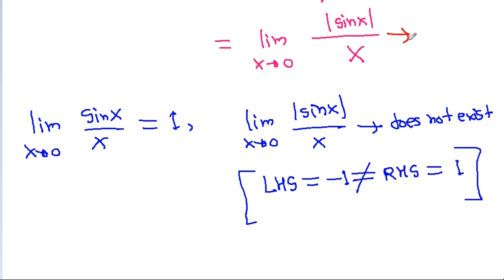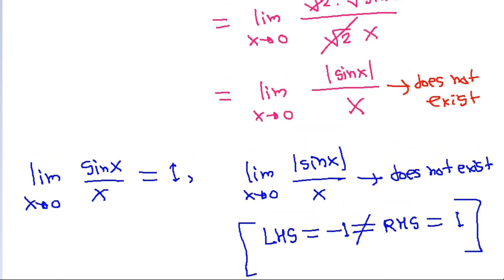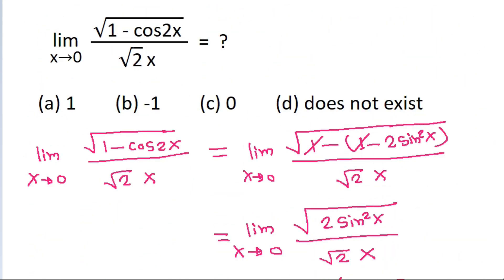So this limit does not exist, hence the correct option is option D.